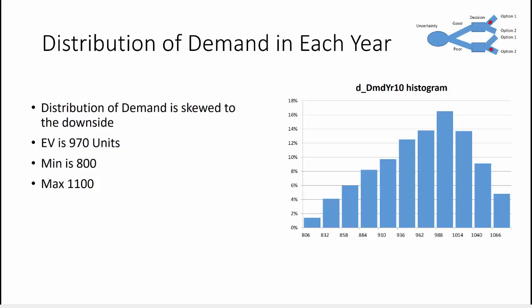The distribution and demand in each year is obviously critical. So the demand distribution is not symmetrical, it's asymmetric. It's got a minimum of 800 and a maximum of 1100. The expected value is 970 units. You can see the distribution, the histogram distribution on the right side there.